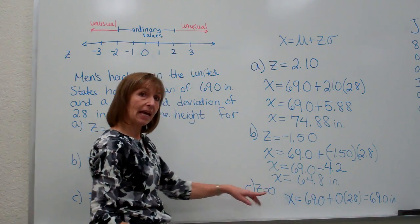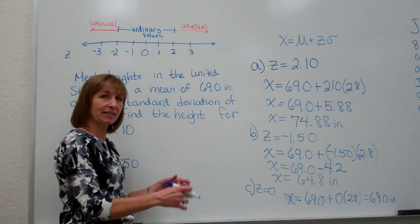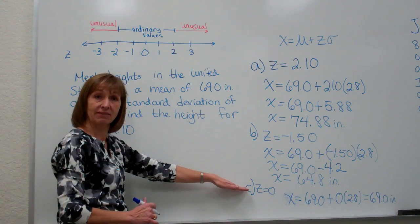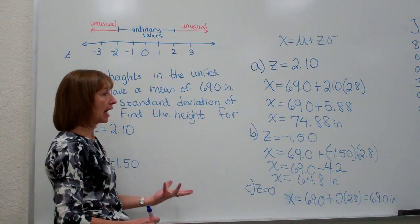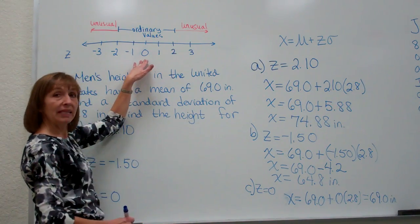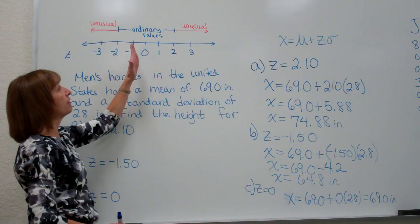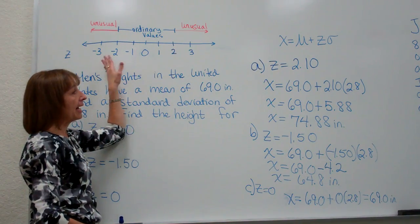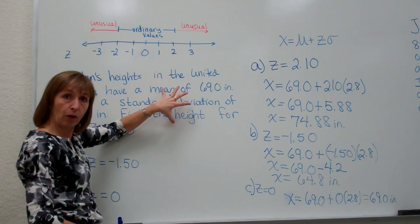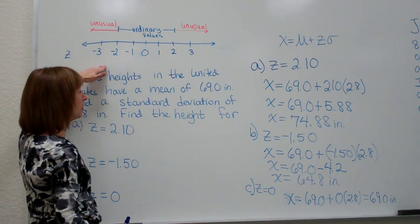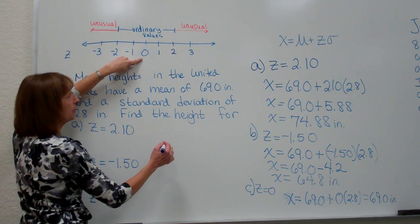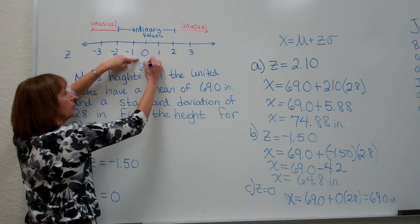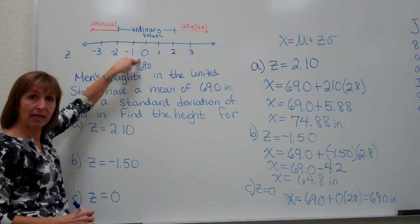Now kind of as a recap and something that can help you just make sure that it is in the ballpark of what you should be getting for these values and common sense sort of double check. When you think back to just some of the integer values of your z-scores and putting the specifics of your problem underneath those values where your z-score is 0 that is actually your mean, your 69.0 for this particular example.